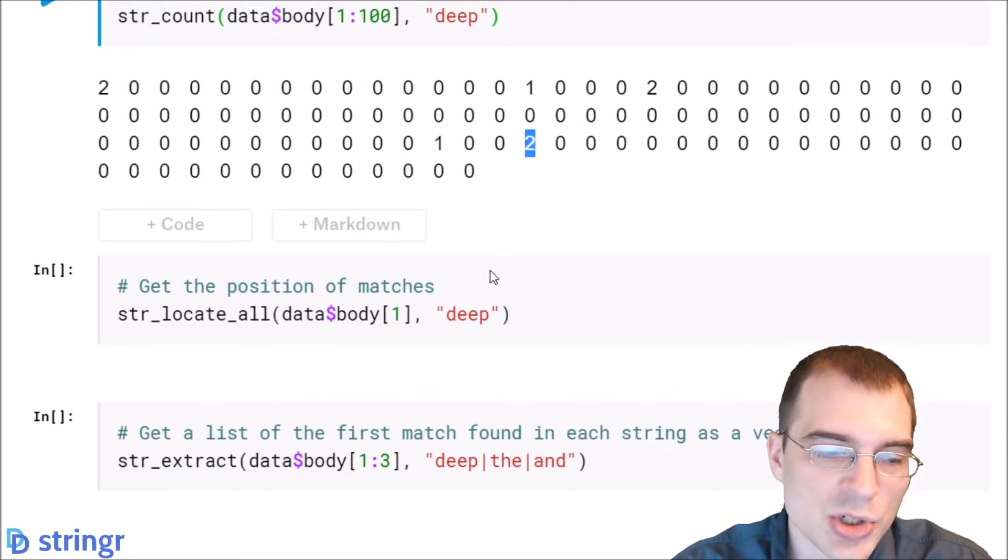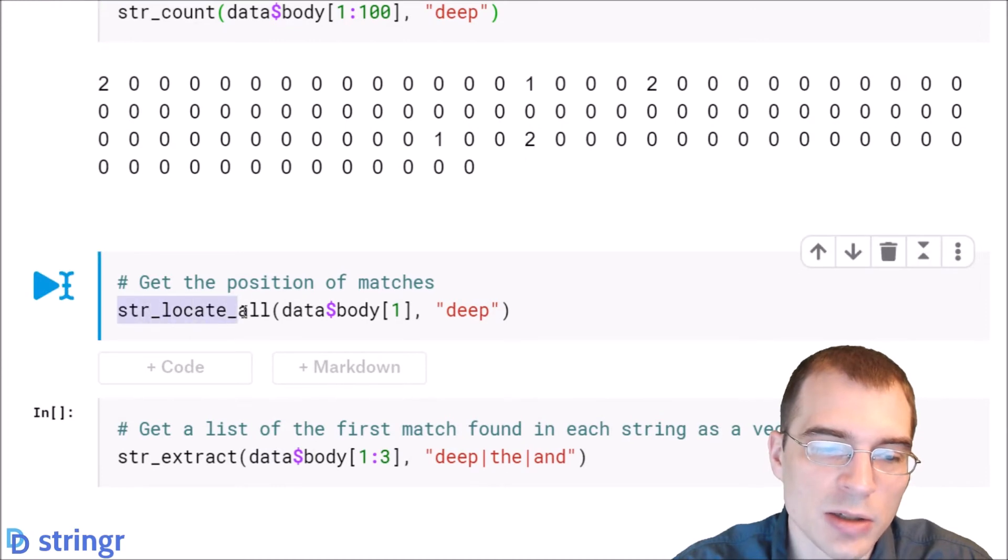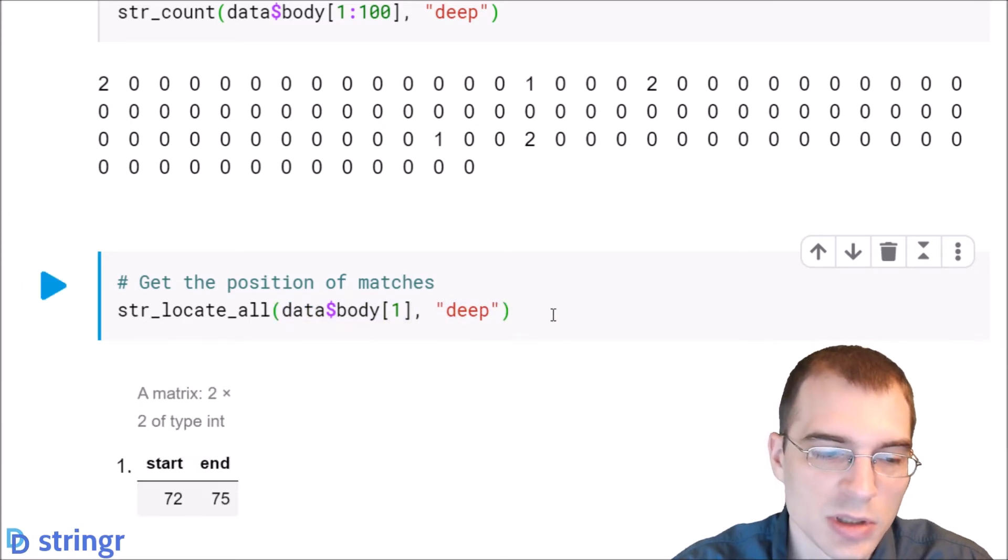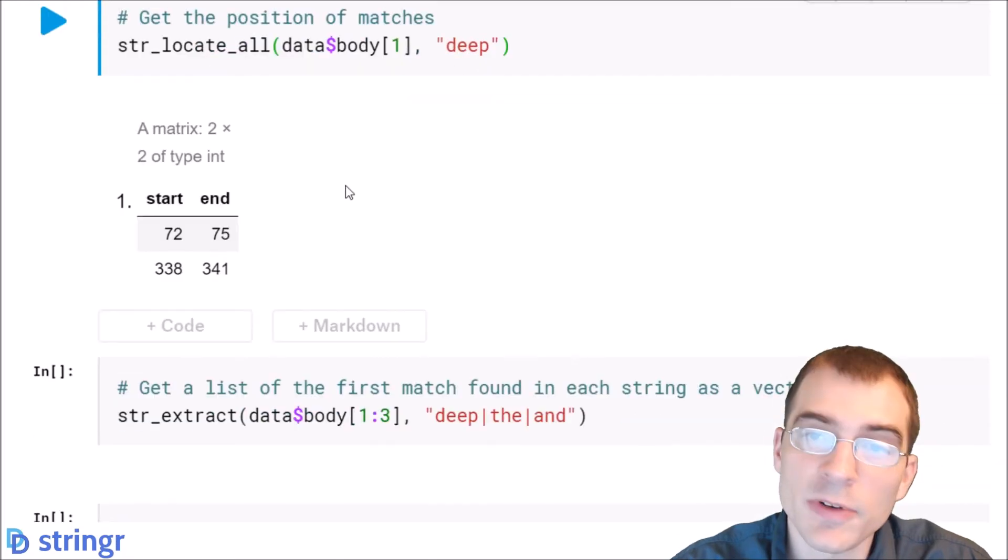We can also use the str_locate_all function to check where the occurrences of the substring are. So we'll just run this only on the first post since we know it does contain two instances of this word deep. So we'll run that and we can see that first one for instance starts at the 72nd position in the string and ends at the 75th position.